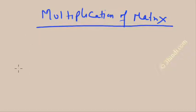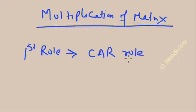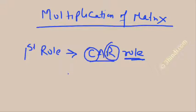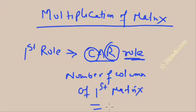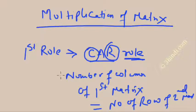The first rule is that you should remember the CAR rule. What is this CAR rule? The meaning of the CAR rule is: C is for column of the first matrix, and R is the number of rows of the second matrix. So, the number of columns of the first matrix must be equal to the number of rows of the second matrix. Once this condition is fulfilled, then only you can multiply the two matrices.